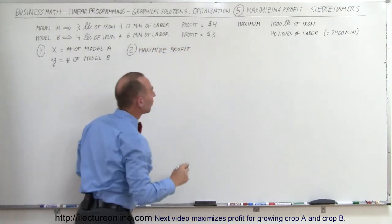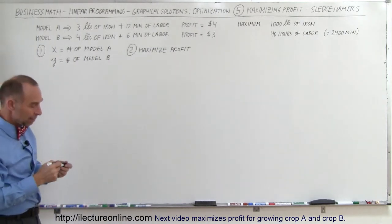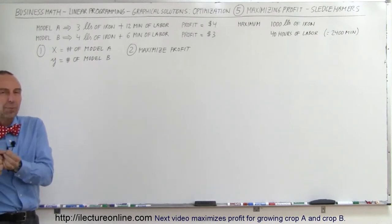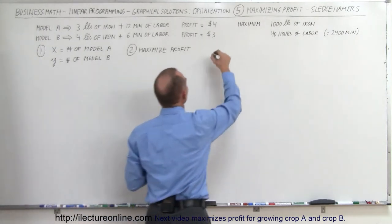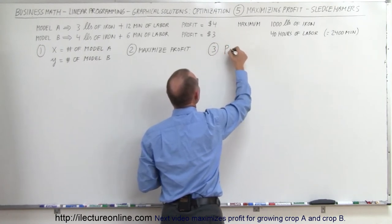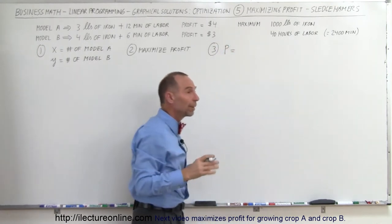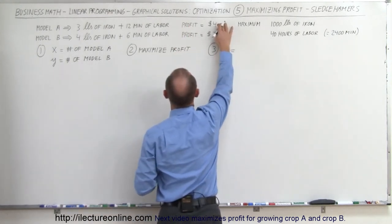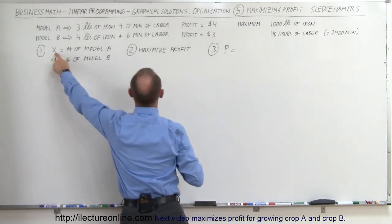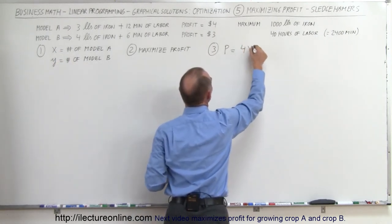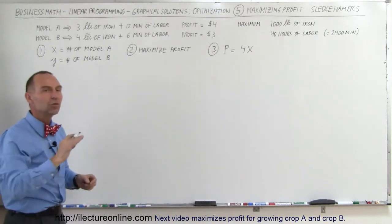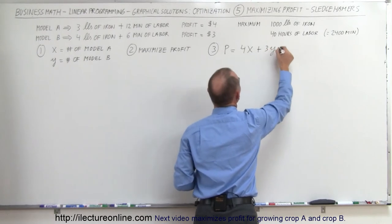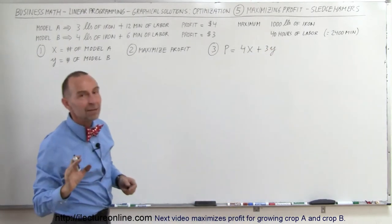The third step: we need what we call an objective function — that's what we call it. We need a function that represents the maximum profit. So the third step is we come up with a function, P equals — it's going to depend upon how much profit we make from each model and how many we build. If we make $4 of profit on model A and we're going to build X quantity, then 4X represents the profit from model A, and plus 3Y represents the profit from model B.